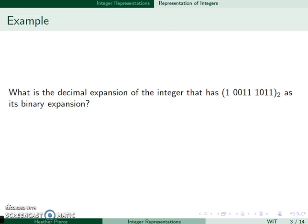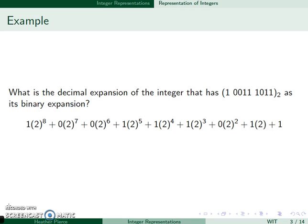For example, if I have a binary number and I want to find the decimal expansion, I raise to increasing powers of 2. So I have 1×2^8 + 0×2^7 + 0×2^6 + 1×2^5 + 1×2^4 + 1×2^3 + 0×2^2 + 1×2 + 1.